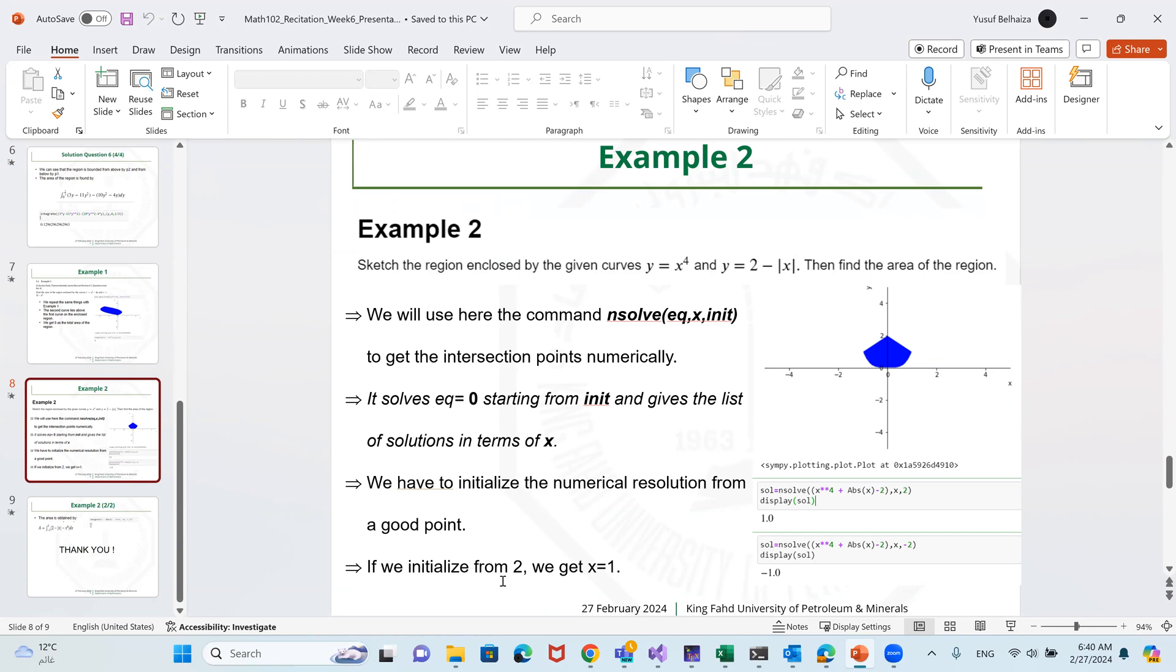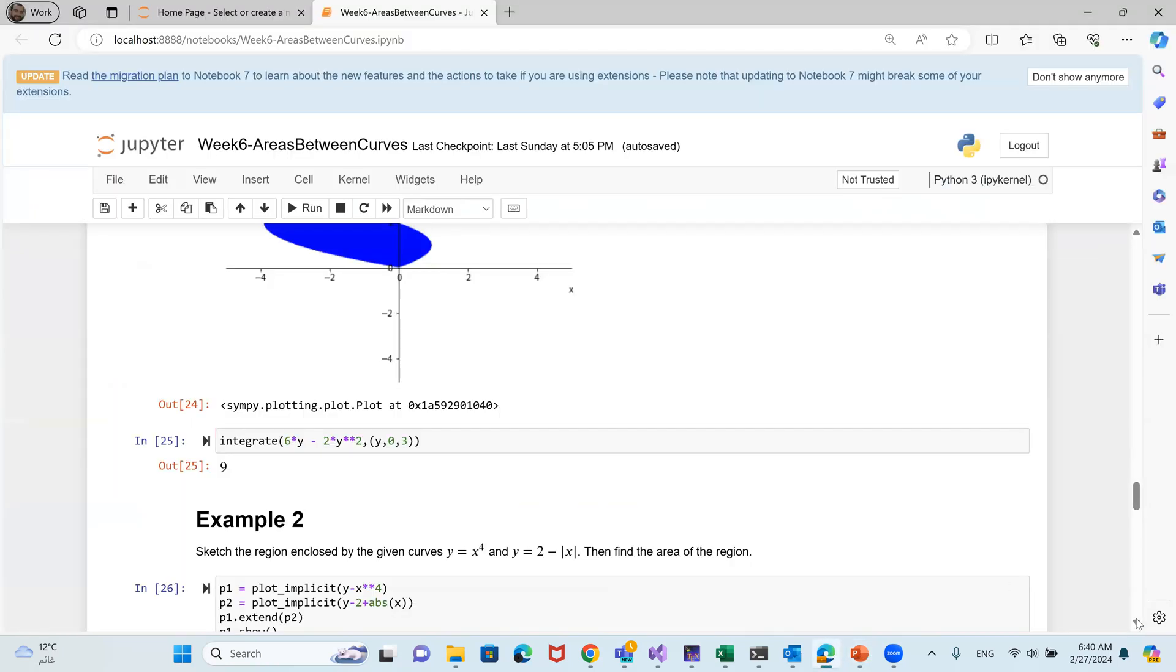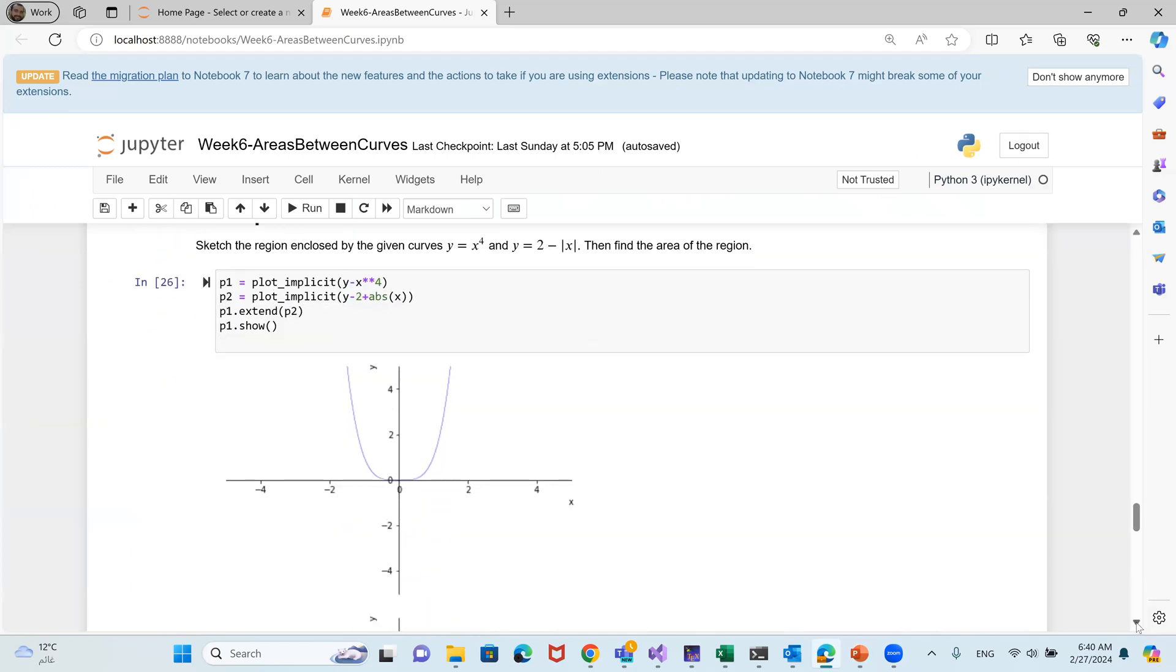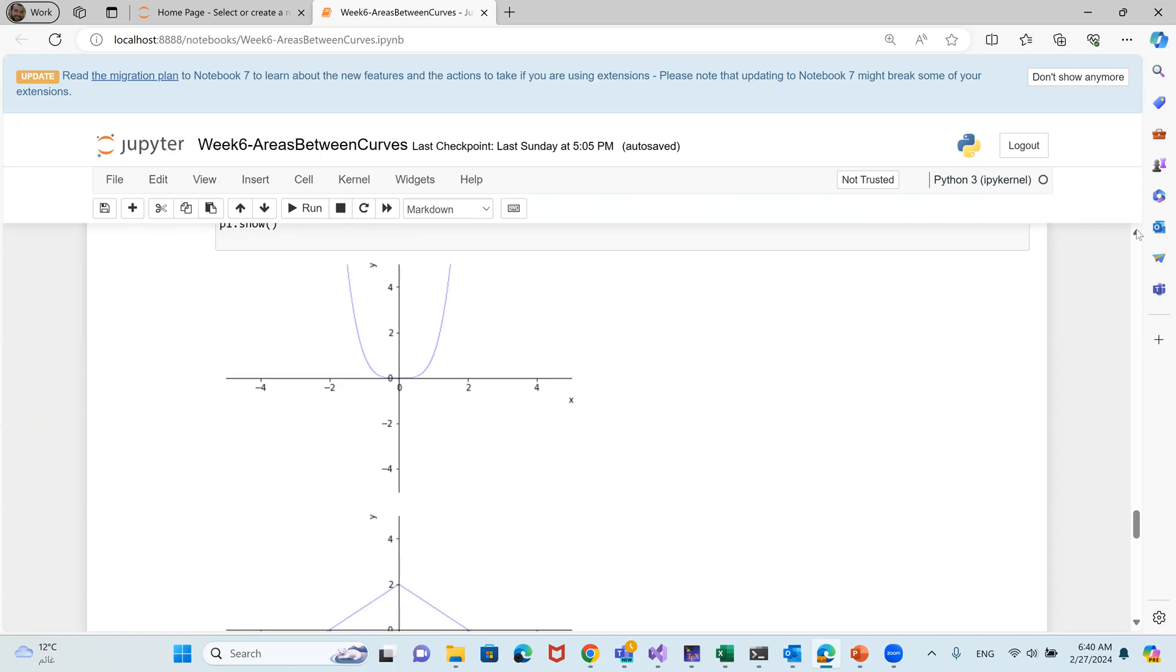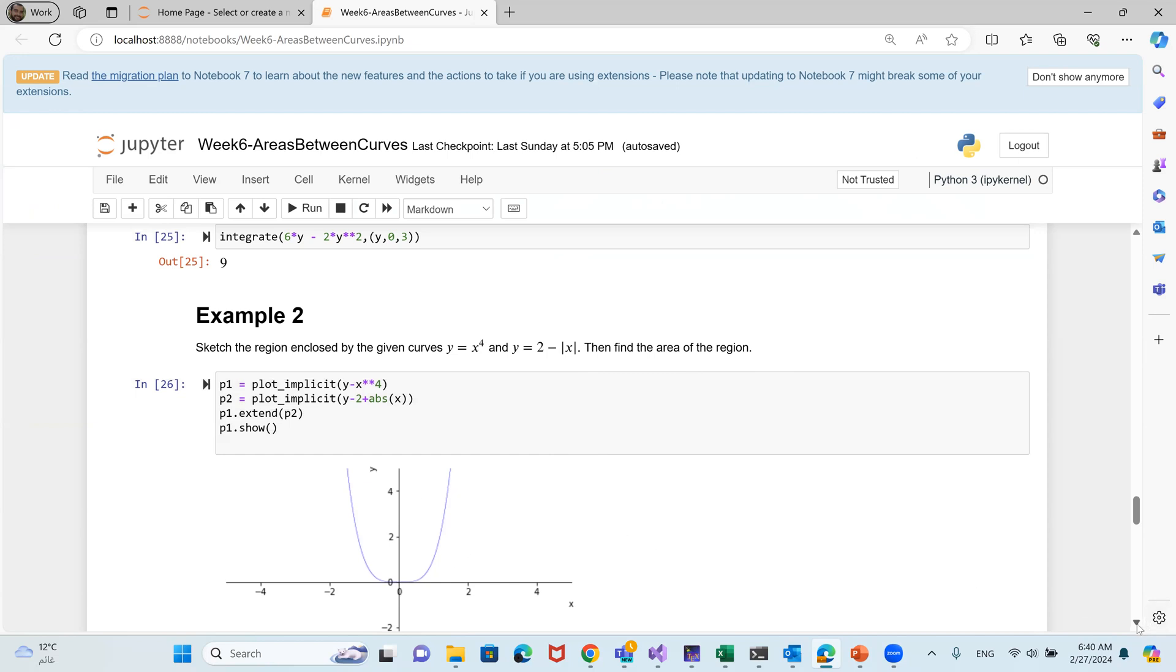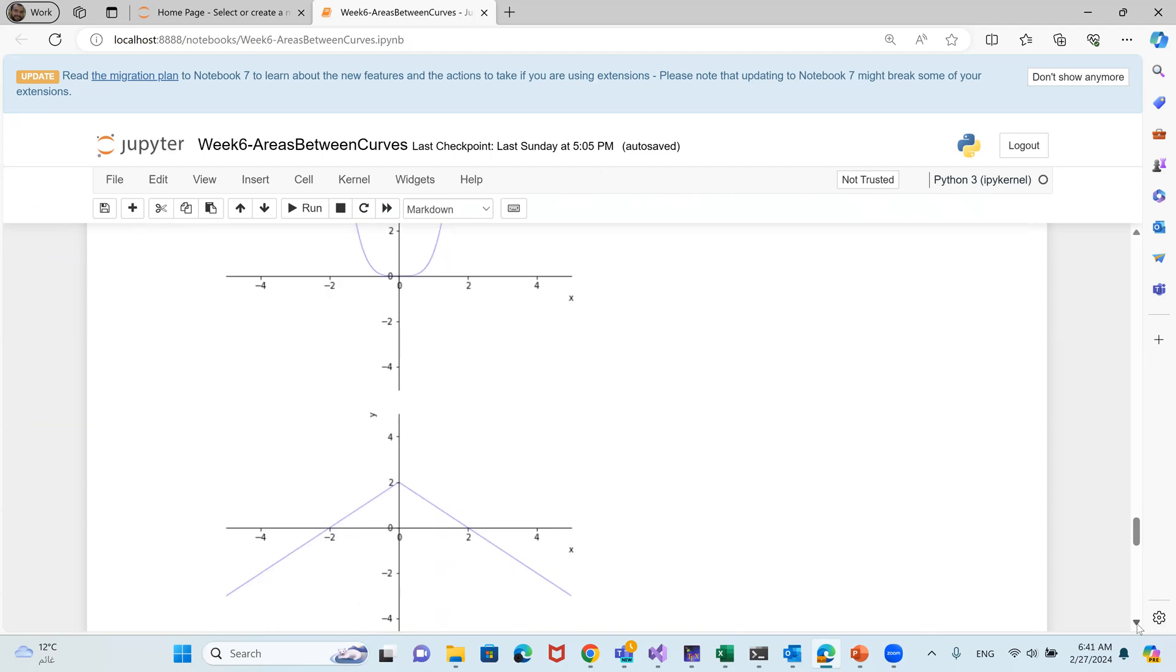We have to initialize the numerical resolution from a good point. And if we initialize from 2, we get x equals 1. Here is the screenshot of the Python file. We solve the equation. If we start from 2, we get 1. If we start from negative 2, we get minus 1. If you want to get a view of the Python file, here it is. The first one, the first graph is x to the power 4. And the second graph is the graph of 2 minus absolute value of x. That's it.